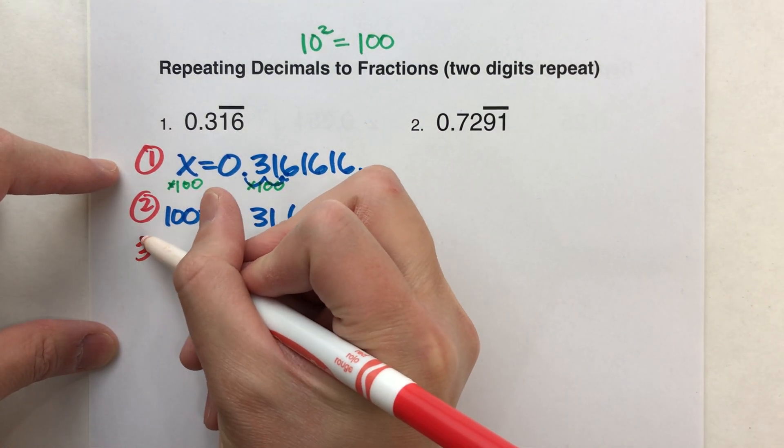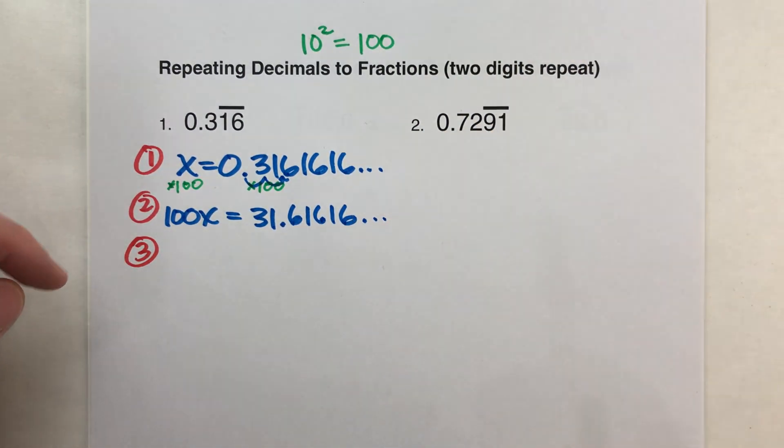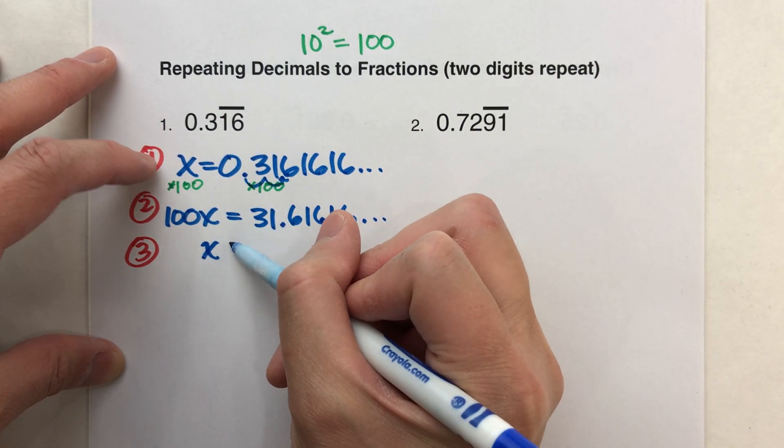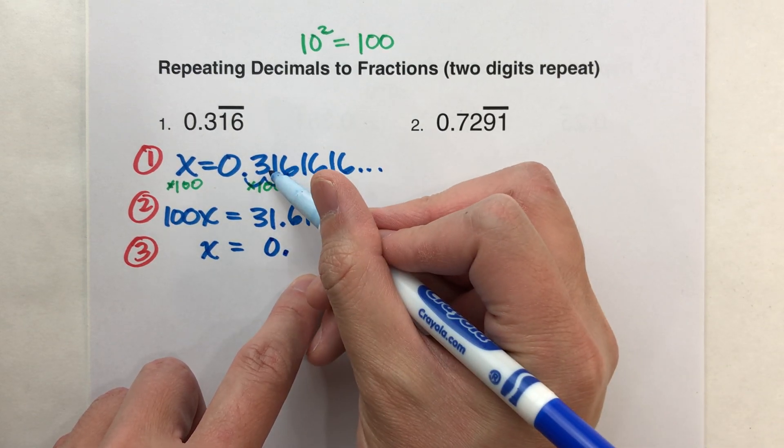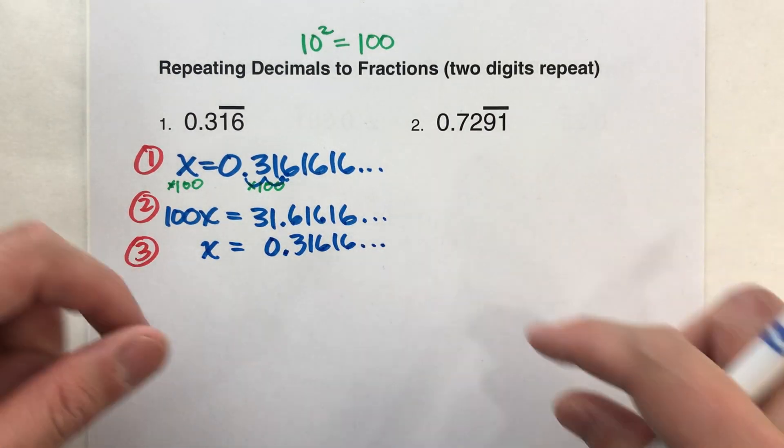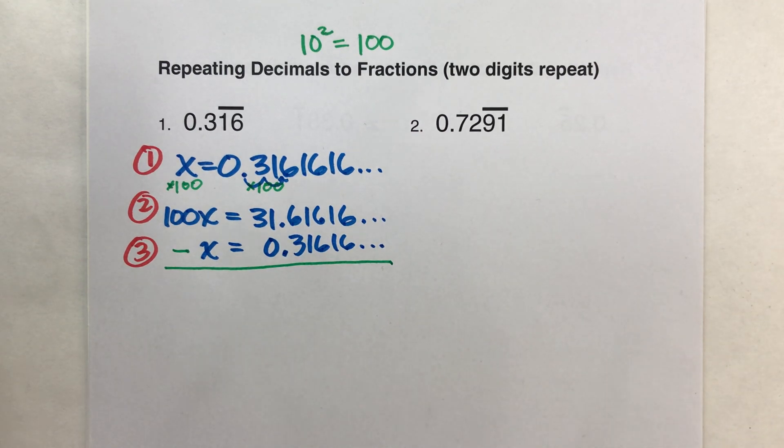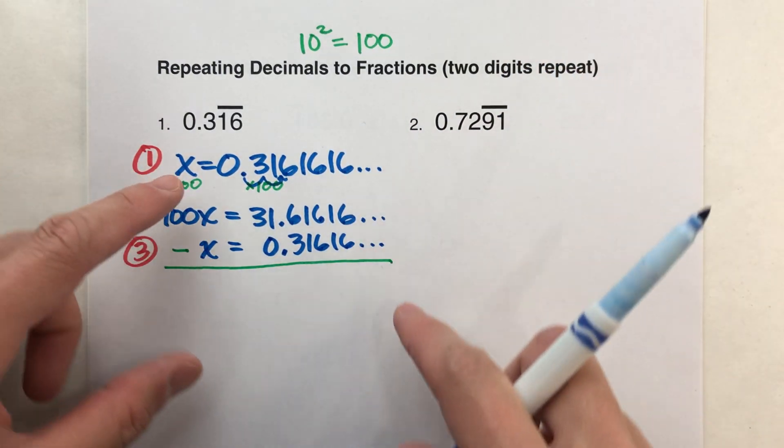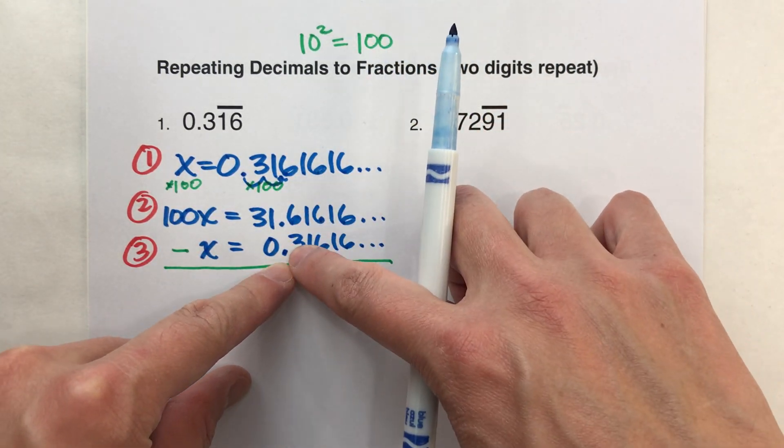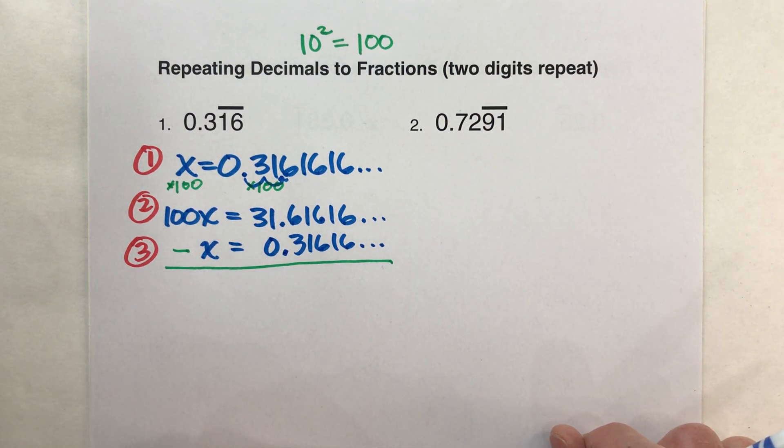Step three. We are going to take this new equation and subtract the original equation from it. So I'm going to take this original equation, x equals 0.31616, forever. And I'm going to write it underneath it, and I'm going to subtract these two equations. And notice how I wrote it. Notice when I put this one underneath it, I lined the x's up, I lined the equal signs up, and I try to line the digits up based on the decimal point. Because I know I'm going to be subtracting them, so I need to have those digits lined up when I subtract them.